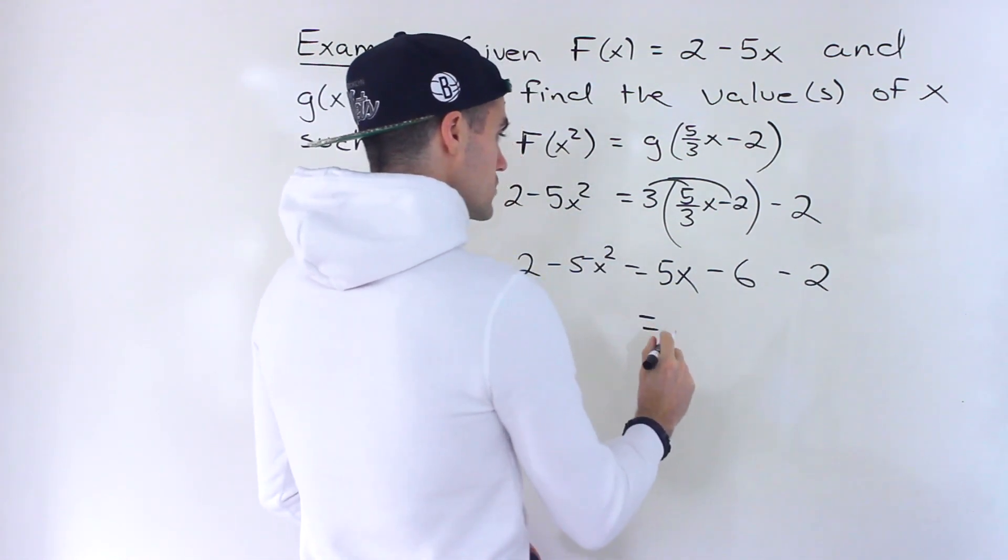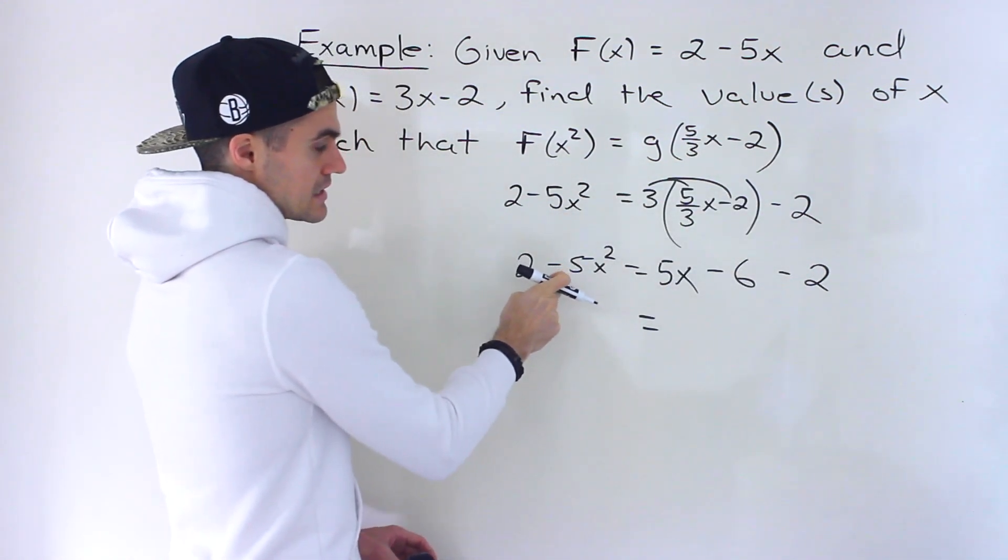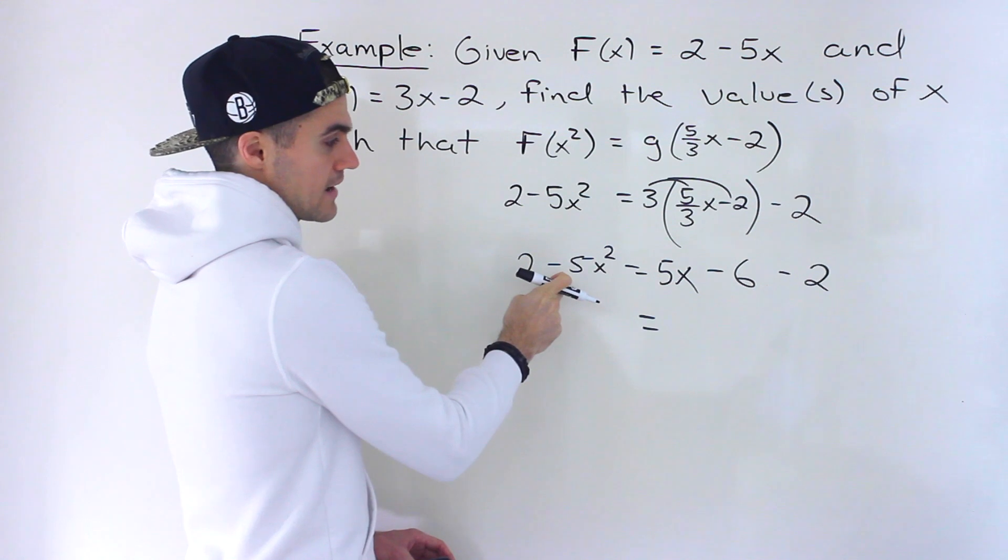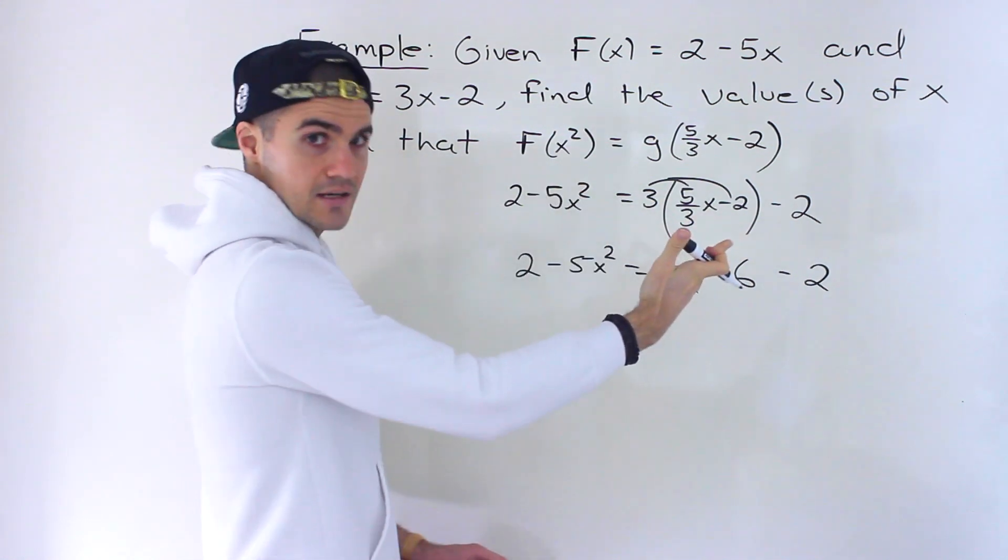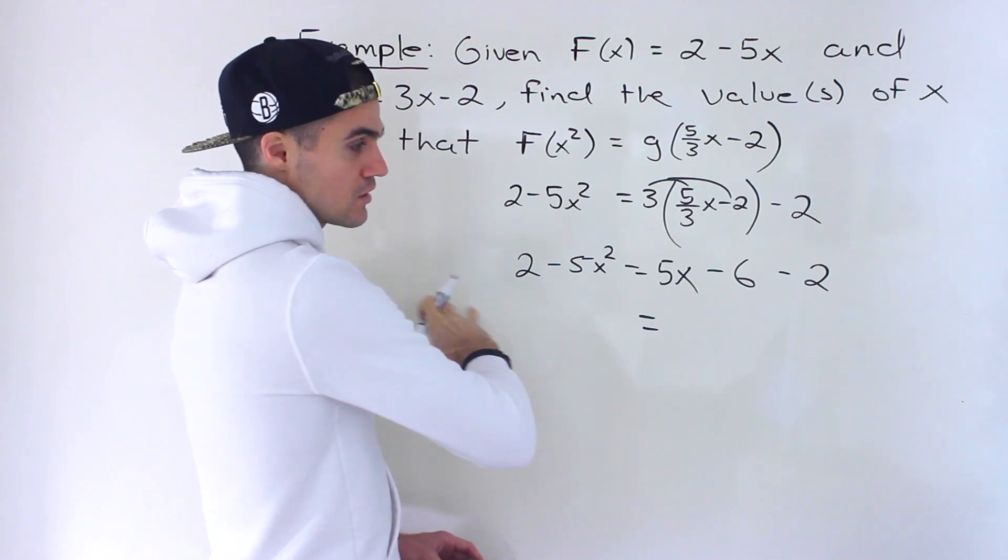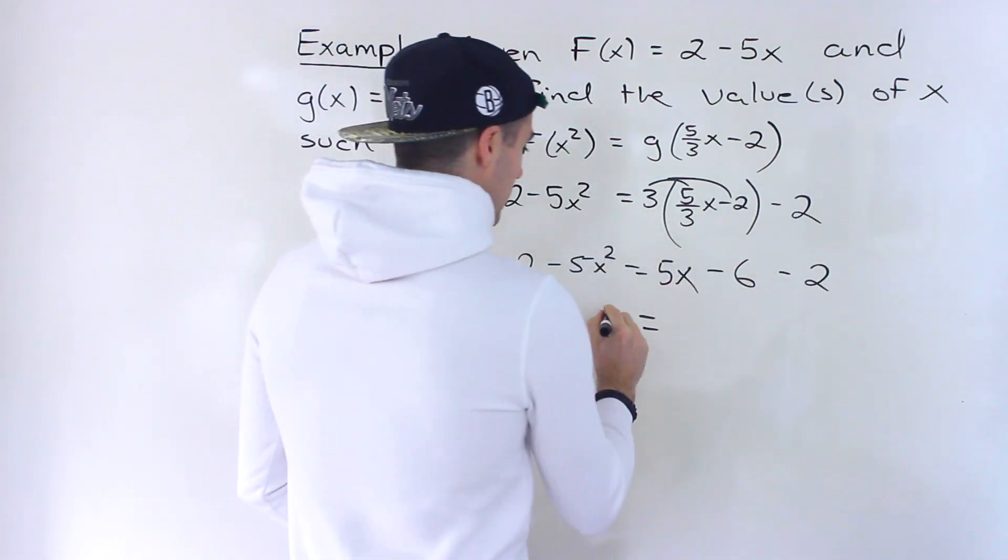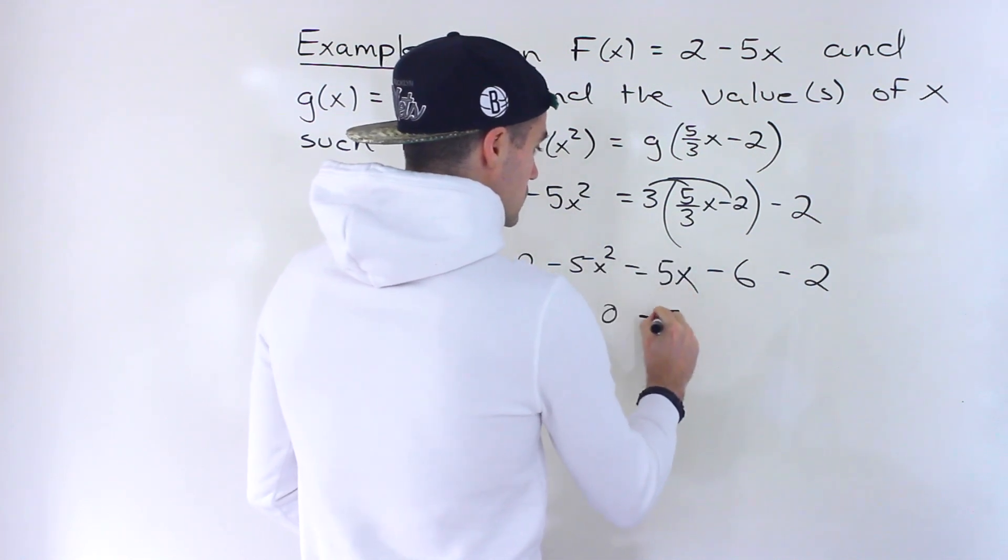And then what I'm going to do is I'm going to bring everything over to the right side just because the leading coefficient here is negative. So just to keep it positive, I'll bring everything to the right side. You can bring everything to the left side and divide everything by negative 1 if you want to. I'm just going to bring everything to the right side. So this would turn into a positive.